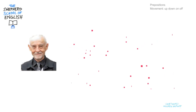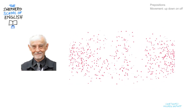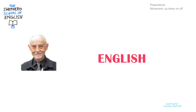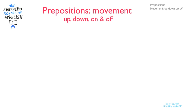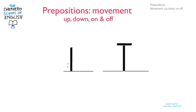Hello, I'm Nick Sheppard, welcome. This video is about four prepositions: up, down, on and off. I'll start with diagrams of what I want to show you. Here's up, here's down, here's on and here's off.